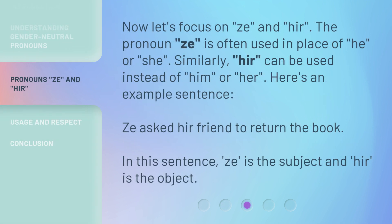Now, let's focus on Ze and Hir. The pronoun Ze is often used in place of 'he' or 'she.' Similarly, Hir can be used instead of 'him' or 'her.' Here's an example sentence: 'Ze asked Hir friend to return the book.' In this sentence, Ze is the subject and Hir is the object.